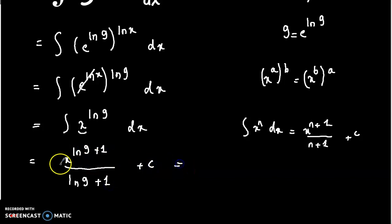And now we can write x to the power ln 9 times x to the power 1, or x, divided by ln 9 plus 1, plus c.